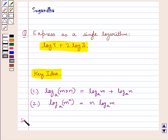Let's proceed with the solution now. We need to express log 4 plus 2 log 3 as a single logarithm.